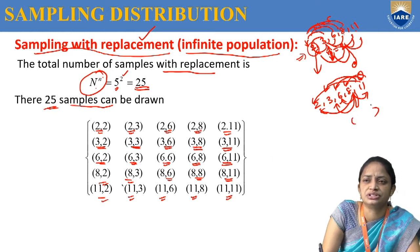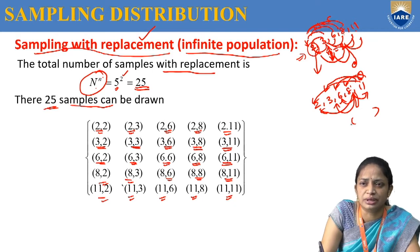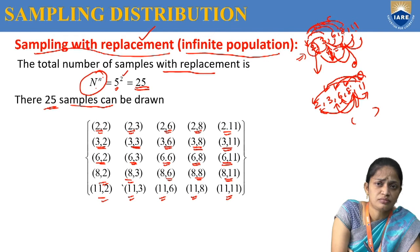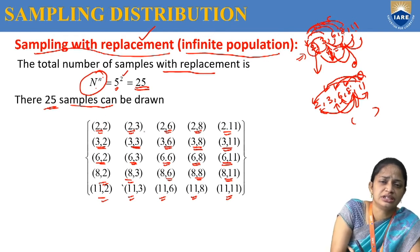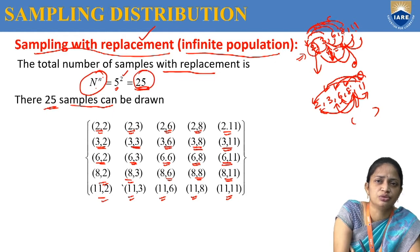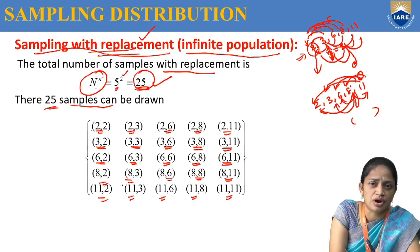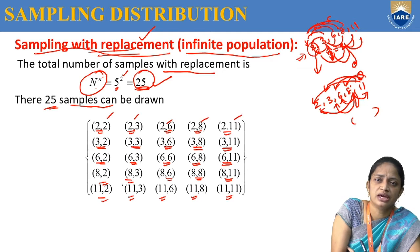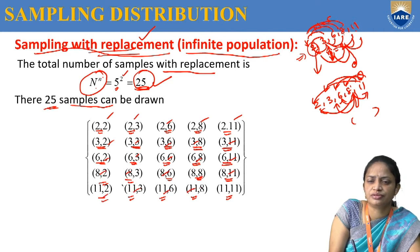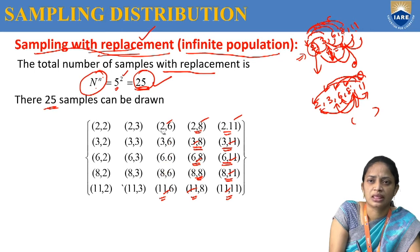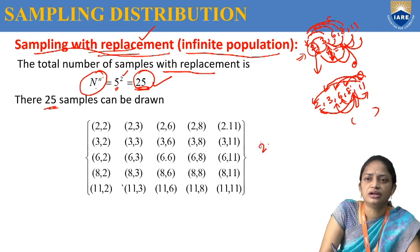We write the samples in bracket notation. Counting all samples: 1 through 25. Total 25 samples are confirmed. In with replacement we can draw 25 samples.